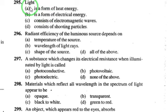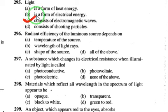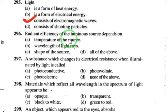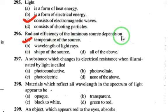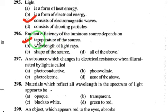The first question: light consists of electromagnetic waves. The radiant efficiency of a luminous source depends on the temperature of the source. If the temperature of the source is more, it will radiate in all directions, so higher temperature gives more efficiency.